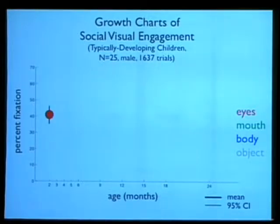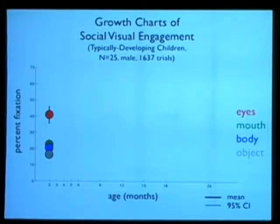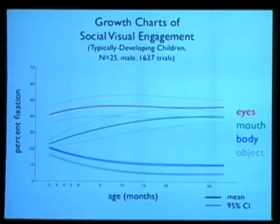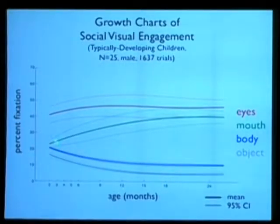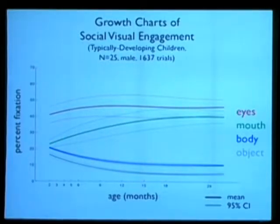We have percent fixation to the eyes, mouth, body, and object. When babies are little, they love to look at the eyes and much less at the mouth, body, and object. But these are growth curves, and with time, typical children will be looking more at the mouth — starting at a time when they are learning to speak.